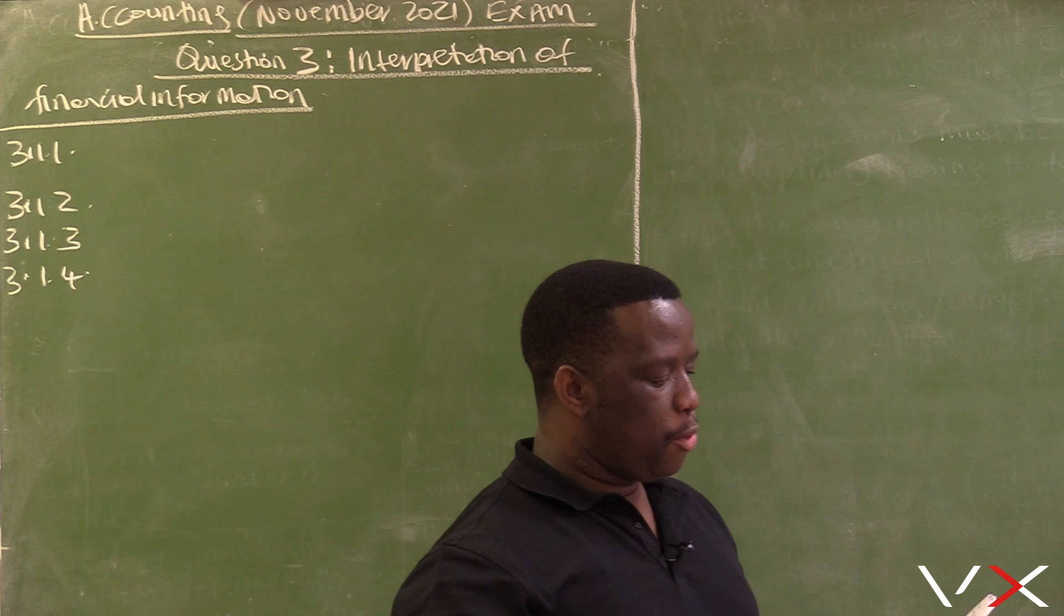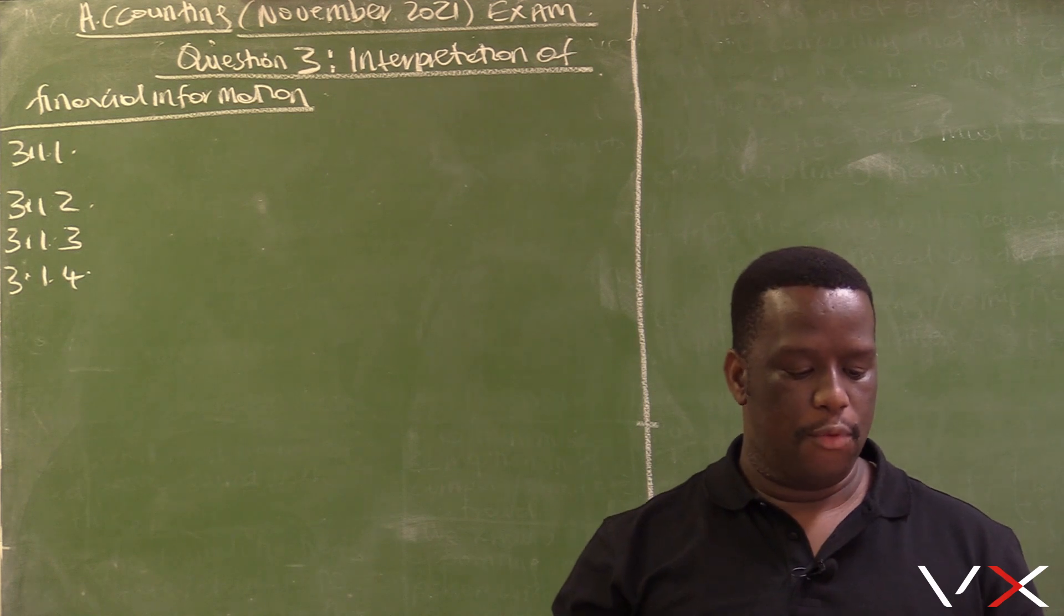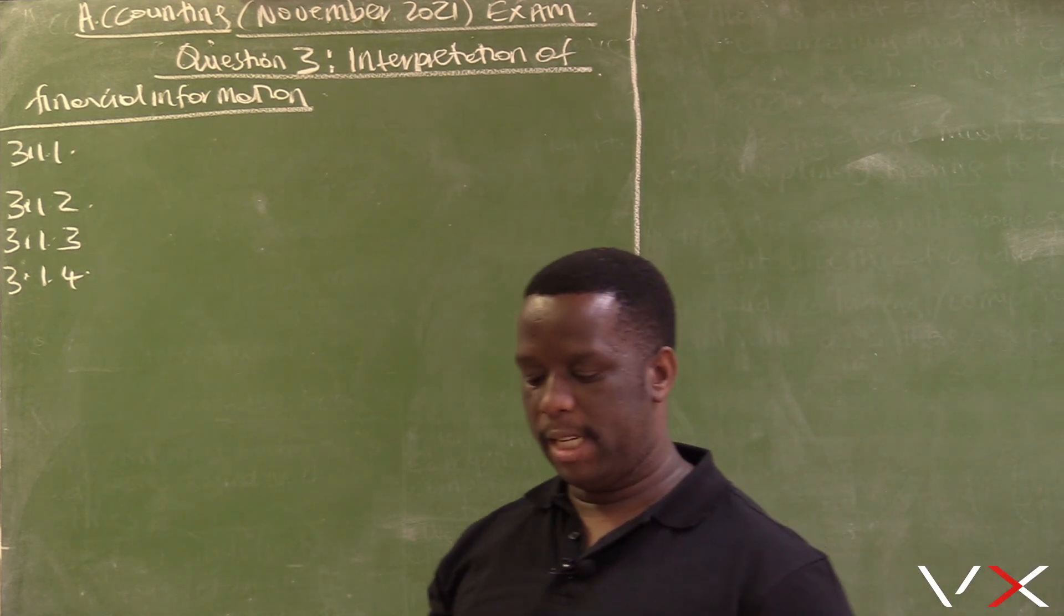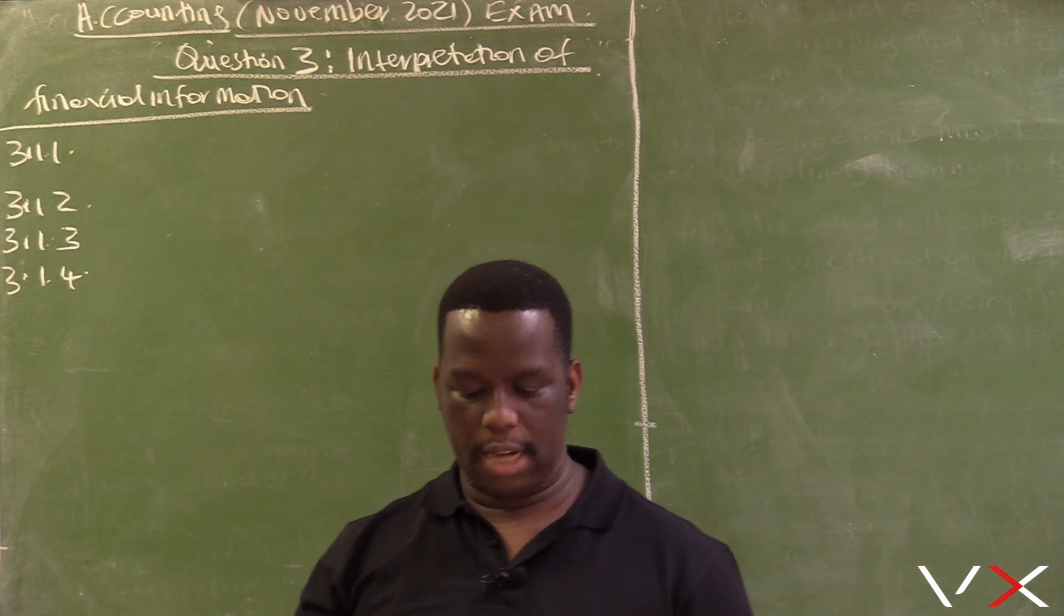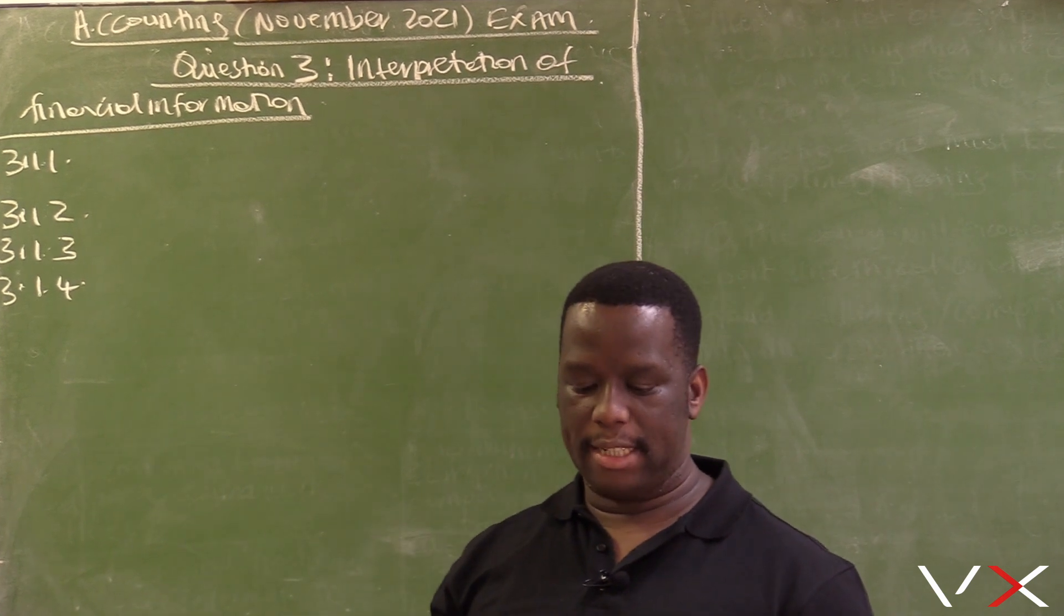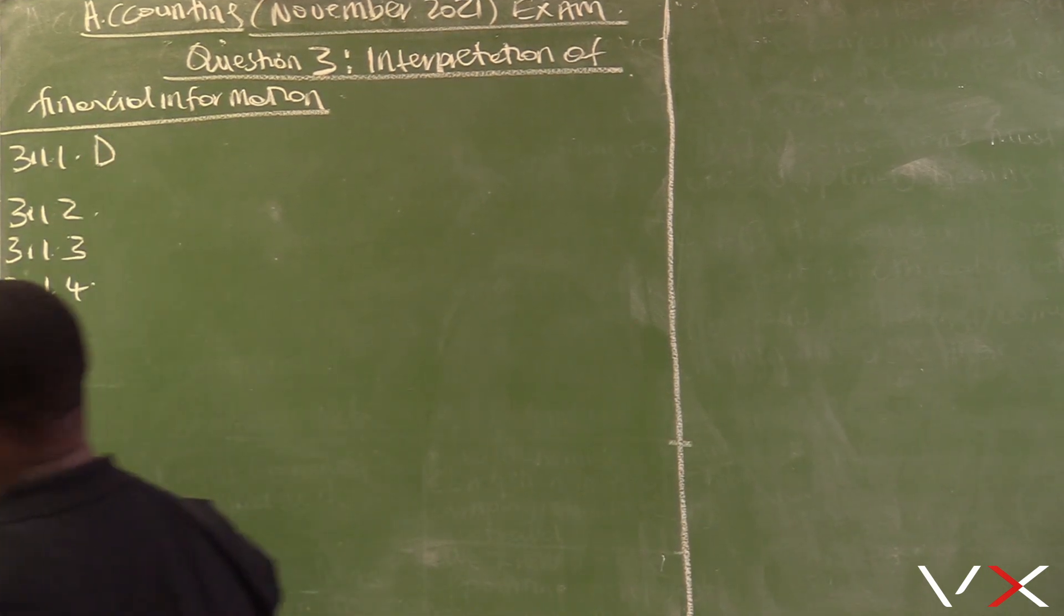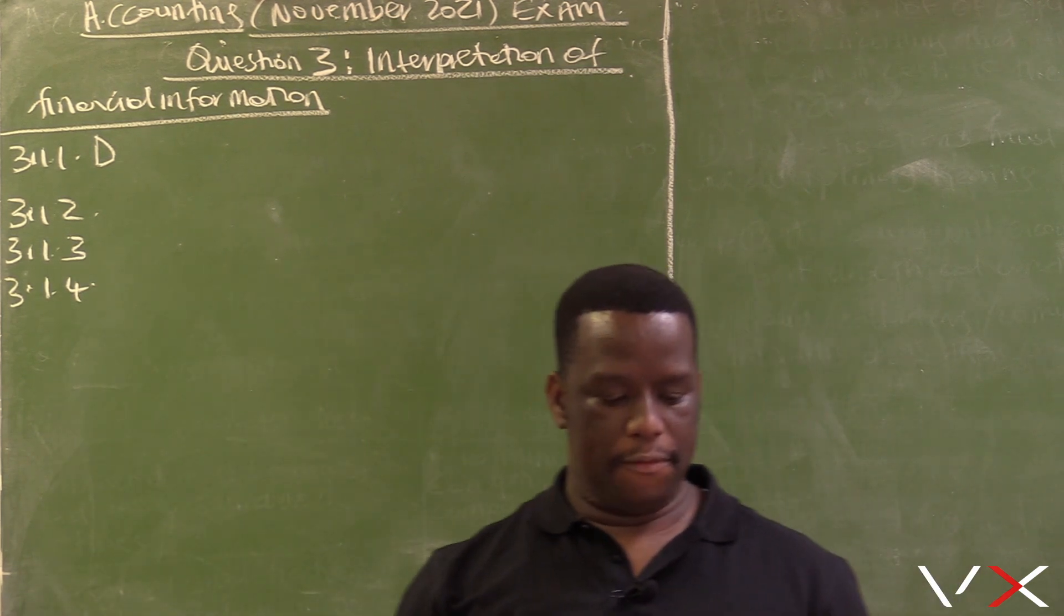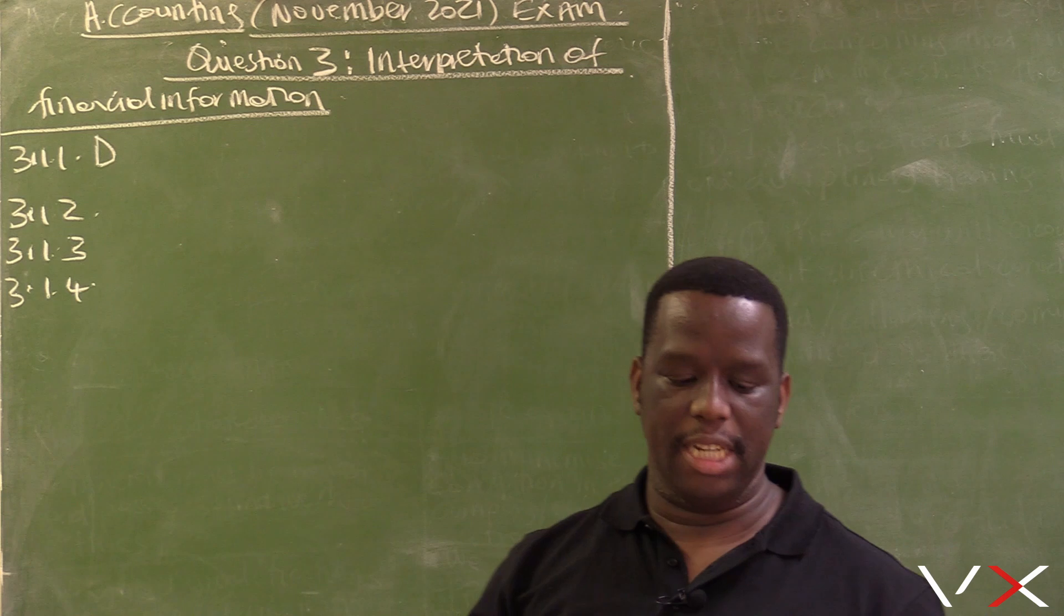With 3.1.1 in column A, it says the benefits that the shareholders receive for investing in the company. And in column B, we have four options to choose from: liquidity, gearing, solvency, or return on equity. We find that 3.1.1 matches exactly with D. The answer to 3.1.1 is D, return on equity. So the benefit that the shareholders receive from investing in the company is the return on equity, which is D.